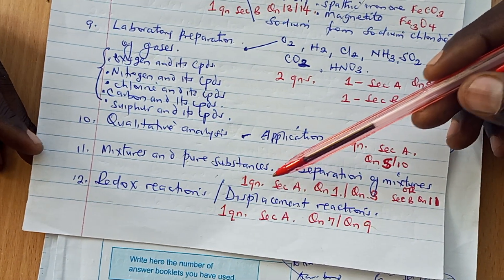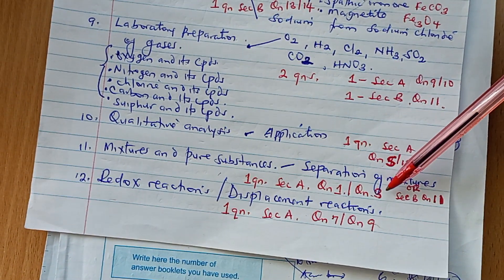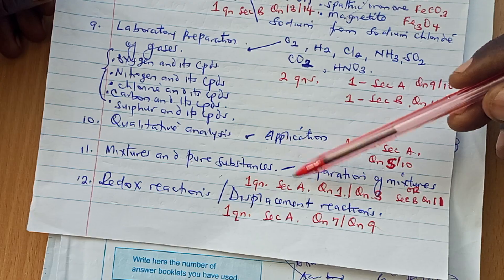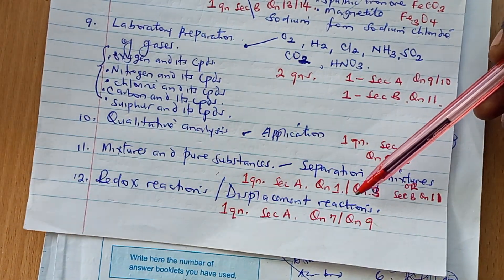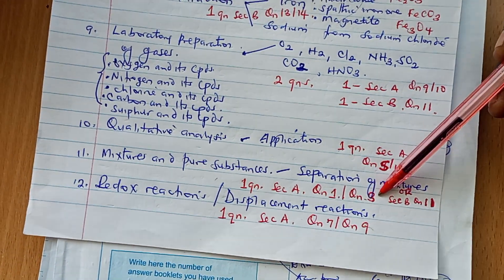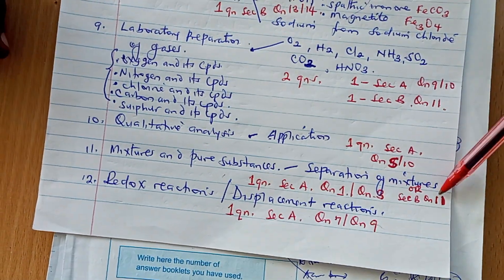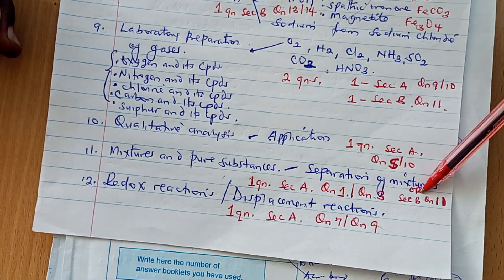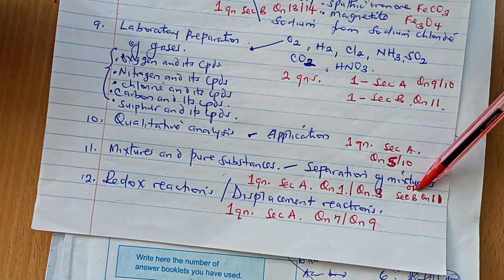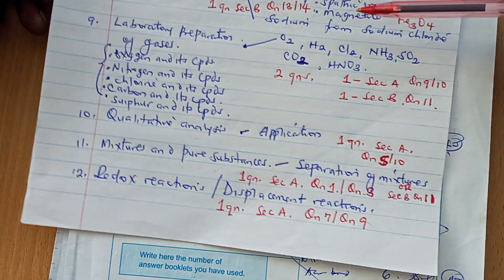The next topic is mixtures and pure substances. One question will always come from this area. If it comes in section A, it is question number 1 or question number 3. It is rarely brought in section B, but if so, question number 11. Always pay keen attention to question number 1 or question number 3.